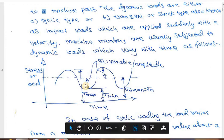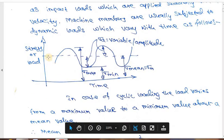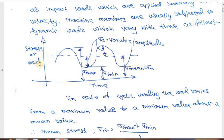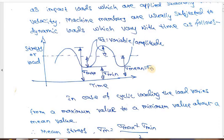Let us study this with respect to a graph. On the y-axis I have stress and on the x-axis I am taking time. This is how the load or stress is going to vary — you should have a sinusoidal curve. This maximum stress is what the member is subjected to, and this is the minimum stress. I will take the mean of these two, shown as a dotted line, giving mean stress, also known as sigma_m.